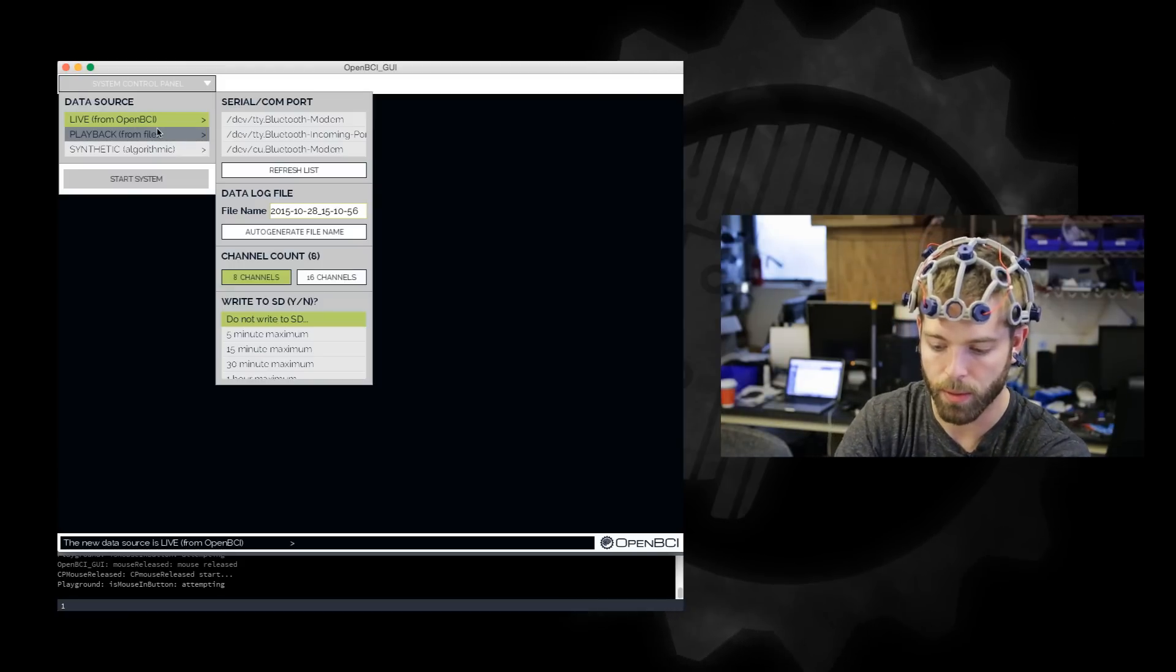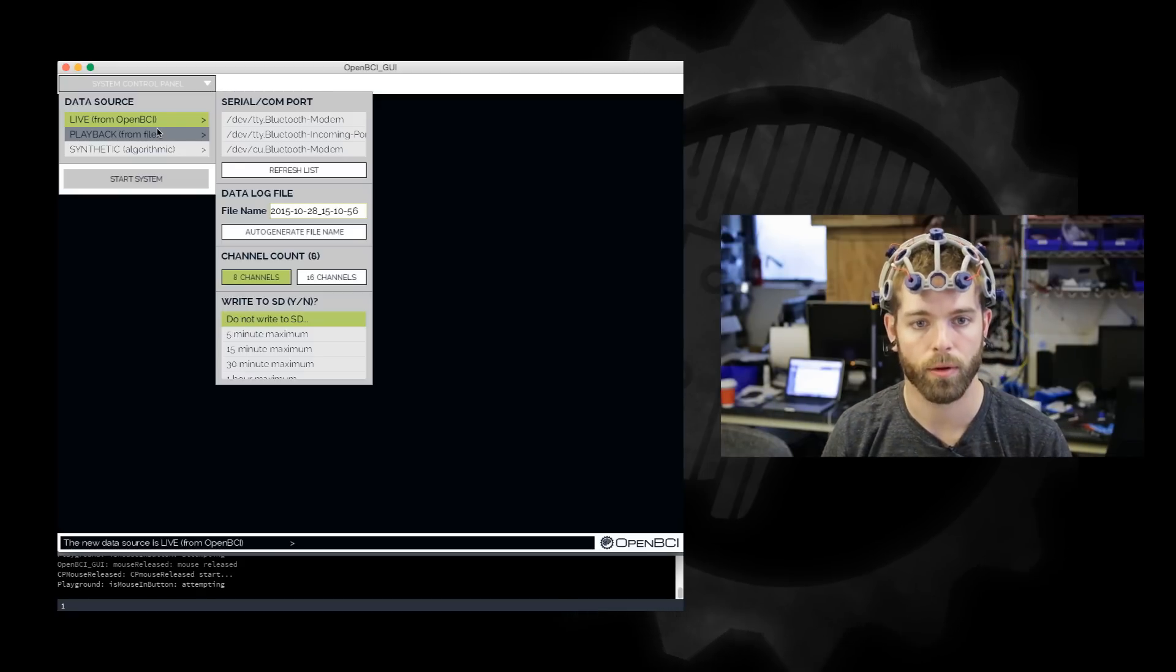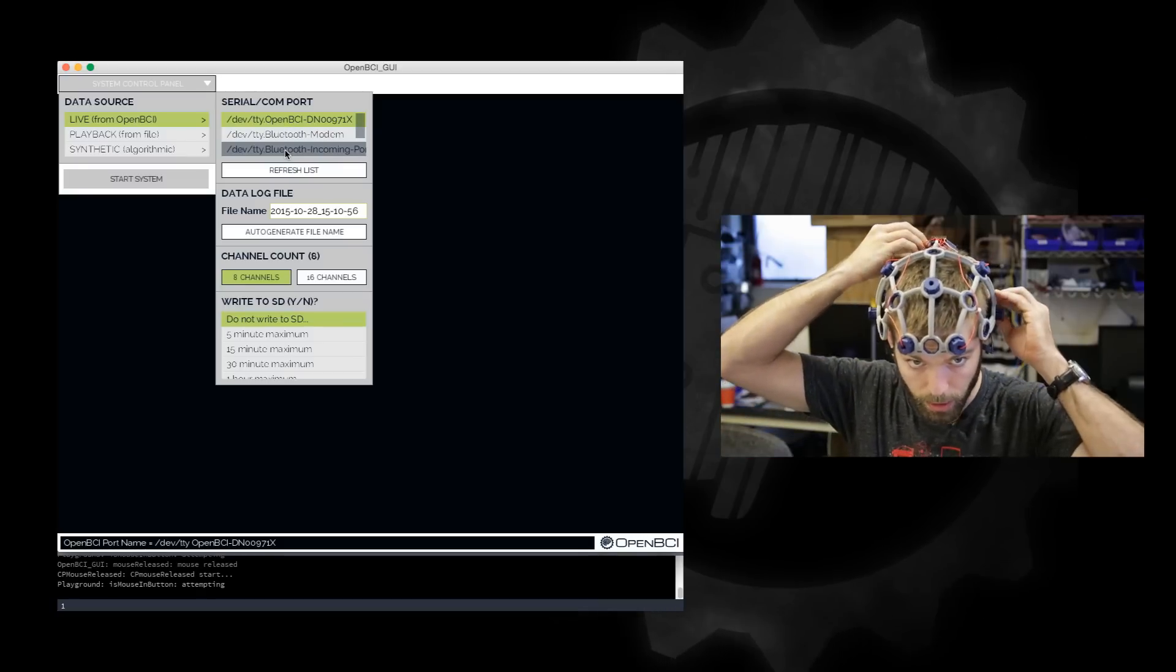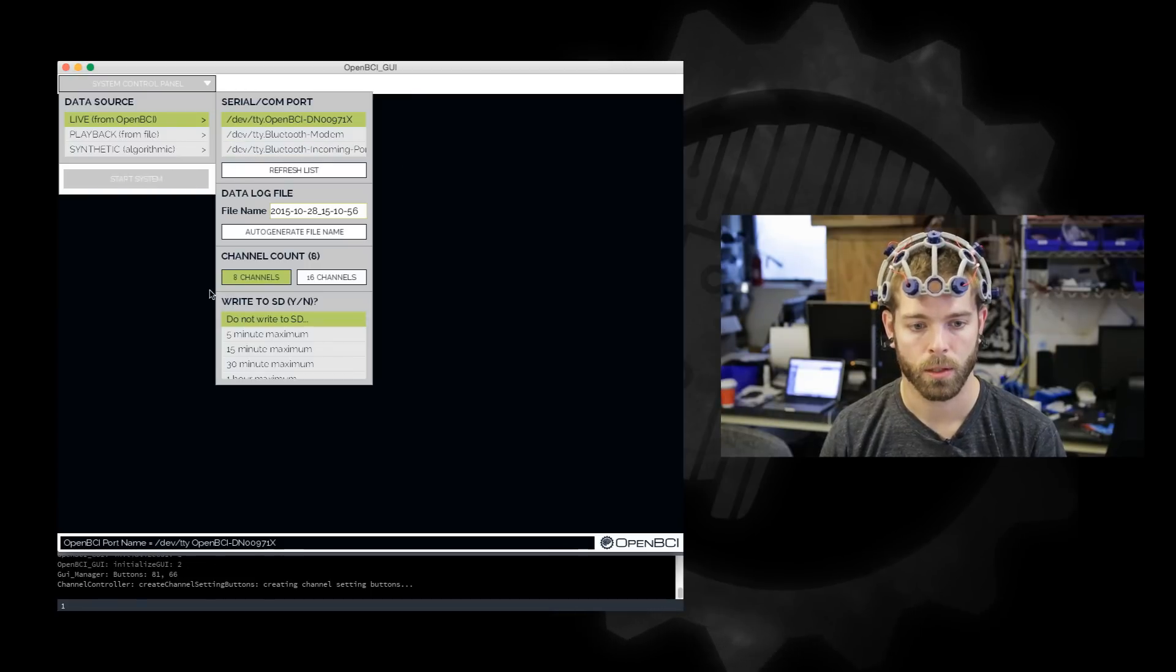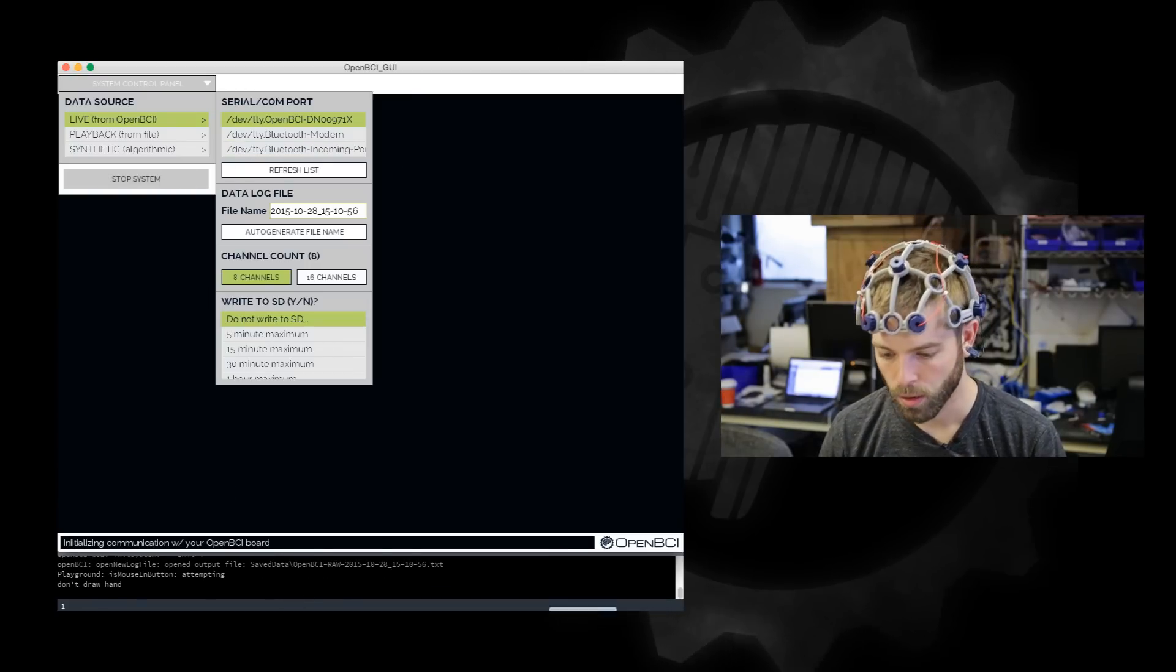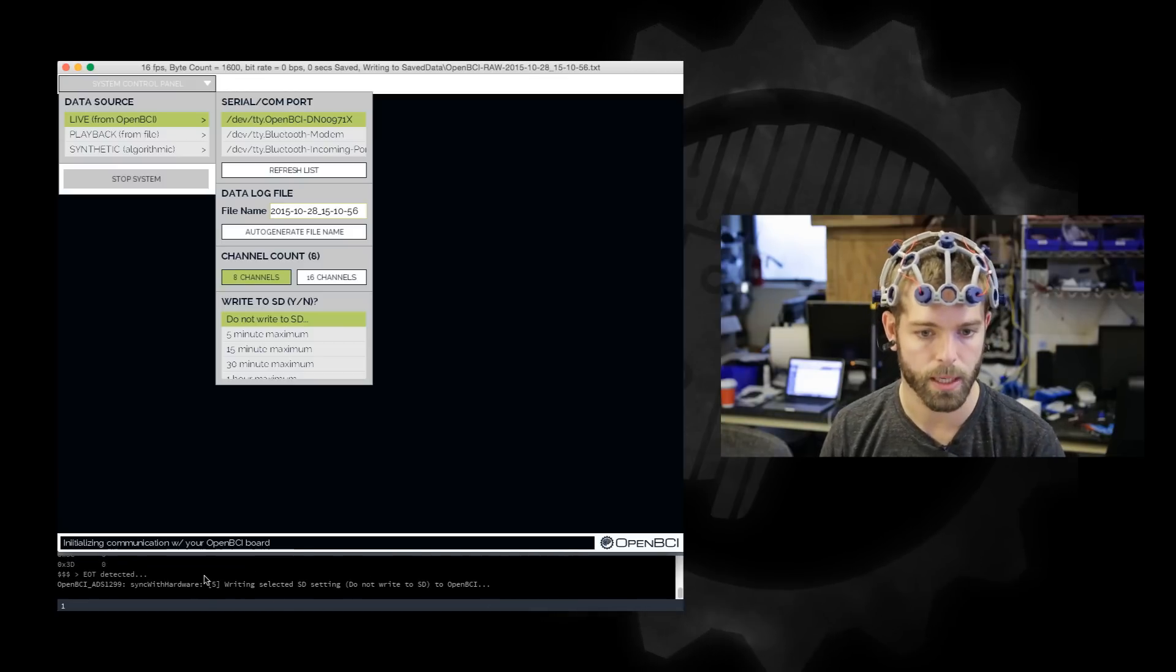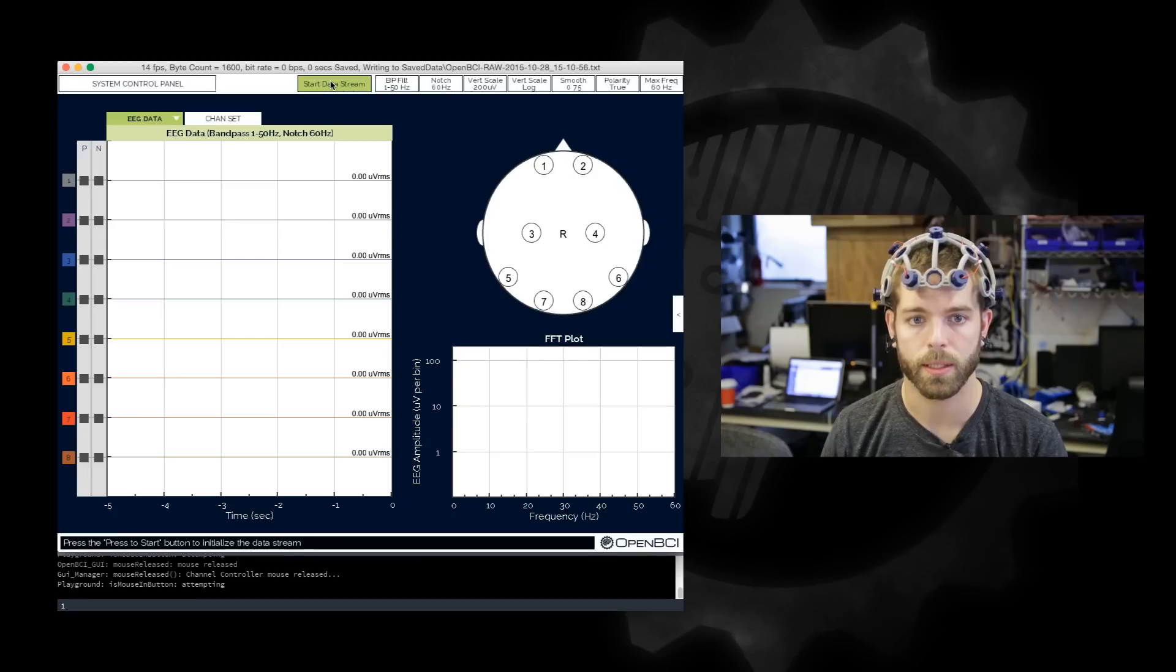So in order to find my serial port I have to plug my dongle in. I can then refresh the list and there's my device, and then I need to turn my OpenBCI board on. So now if I click start system you'll notice that once the radio finds the device you'll see the registers of the OpenBCI board printing, and now I am in the GUI and connected to the OpenBCI device.